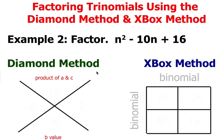Go ahead and set up your diamond method by drawing an X. At the top, you're going to write the product of the a value and the c value. So 1 times 16 is 16.